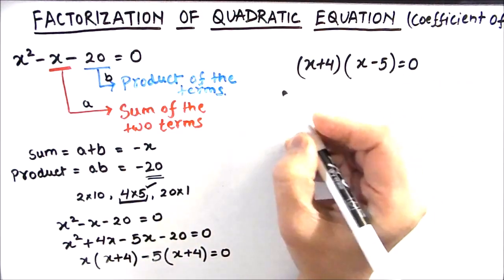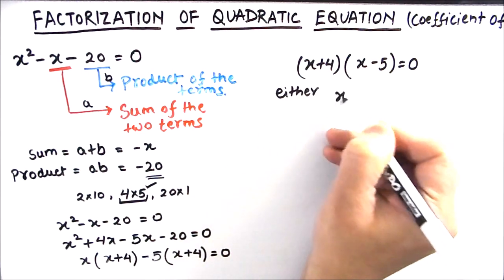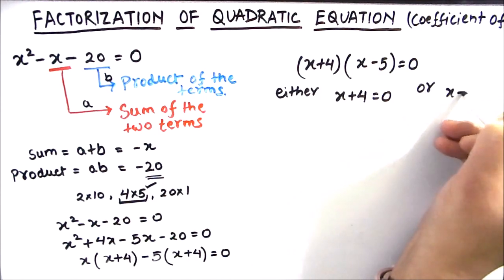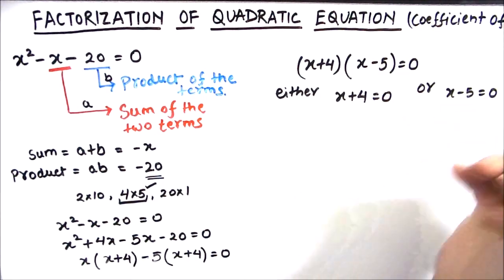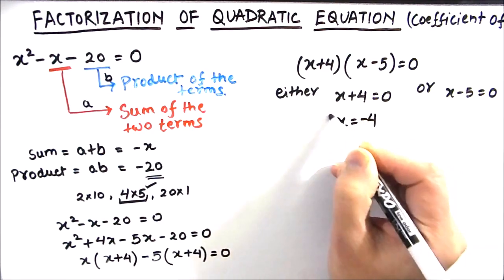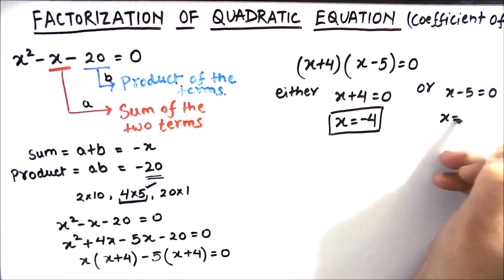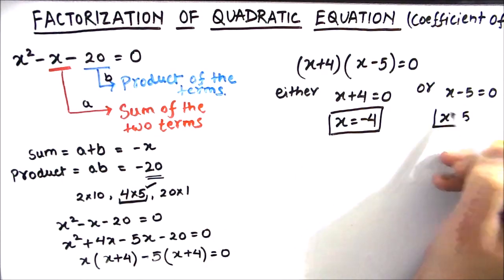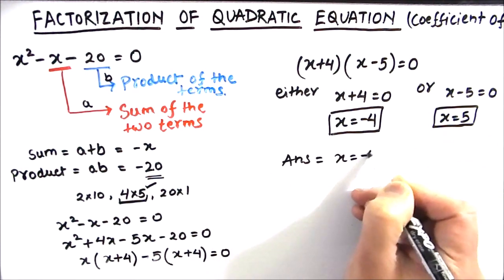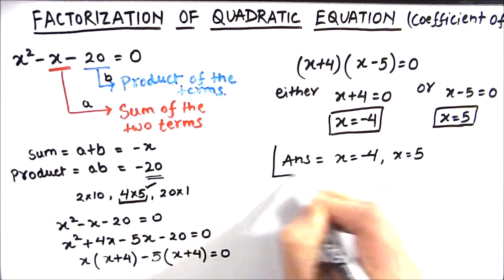The product of two expressions is equal to 0, so either x plus 4 is equal to 0, or x minus 5 is equal to 0. When x plus 4 equals 0, we get x is equal to negative 4. When x minus 5 equals 0, we get x is equal to 5. So the two roots of the equation are x equals negative 4 and x equals 5. This is our final answer.